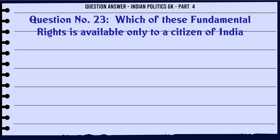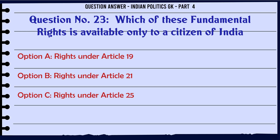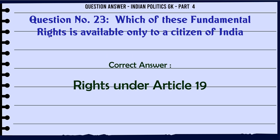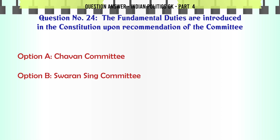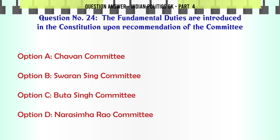Which of these fundamental rights is available only to a citizen of India? A. Rights under Article 19. B. Rights under Article 21. C. Rights under Article 25. D. Rights under Article 28. The correct answer is rights under Article 19.